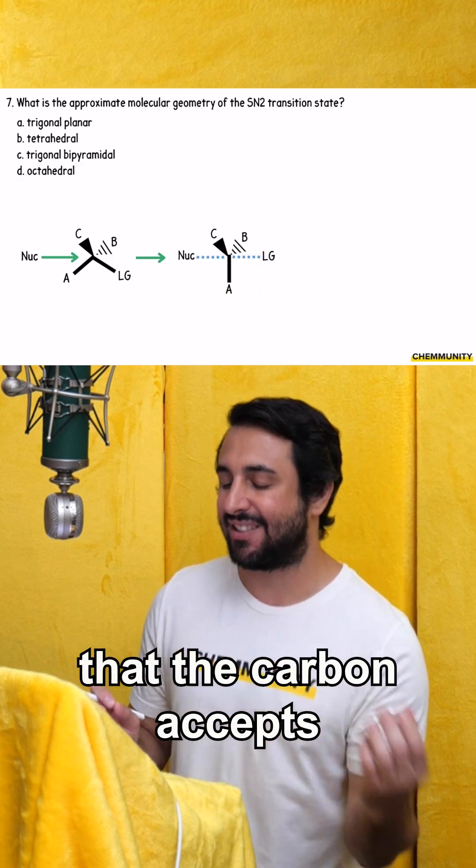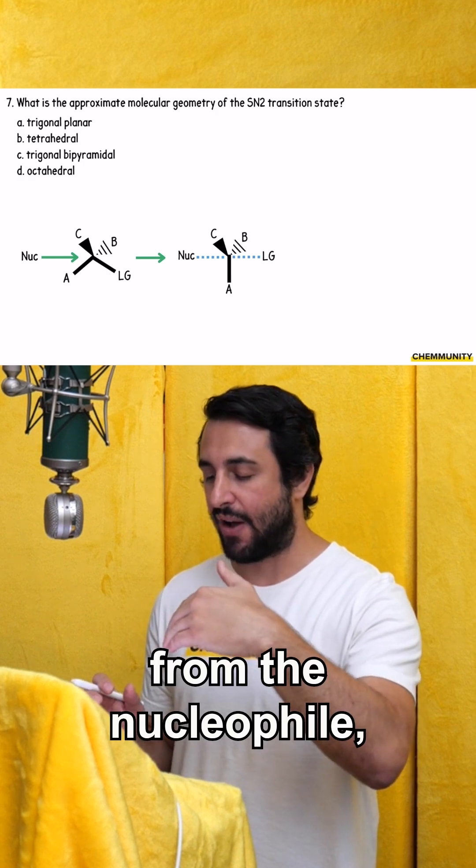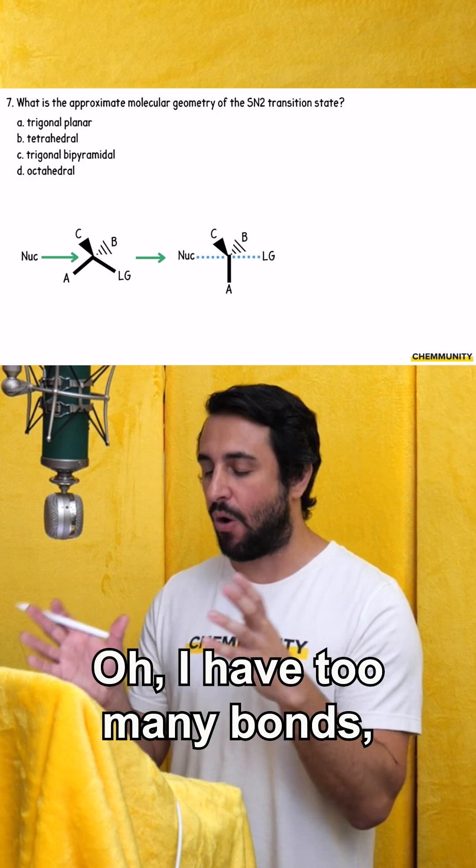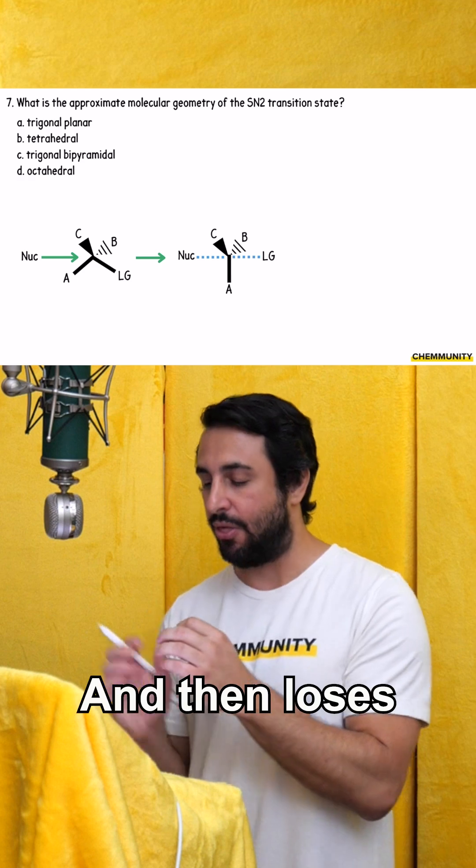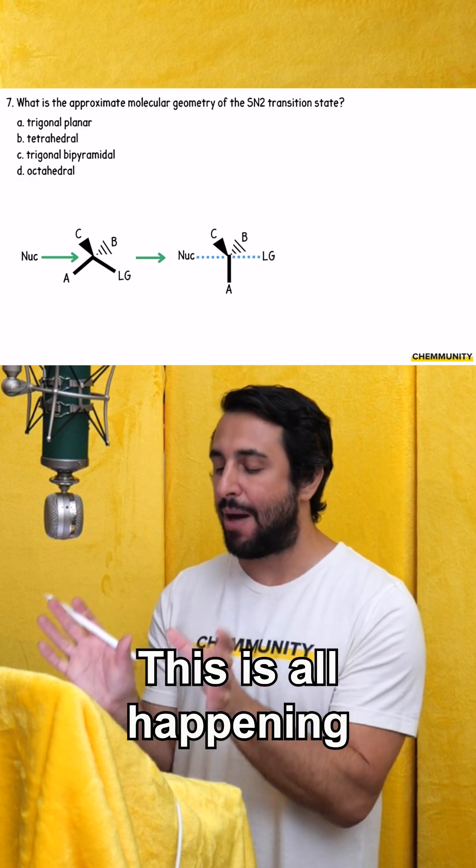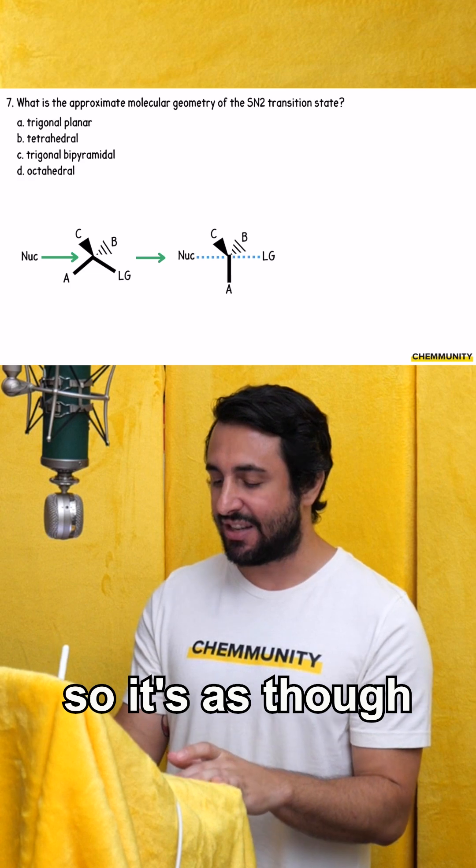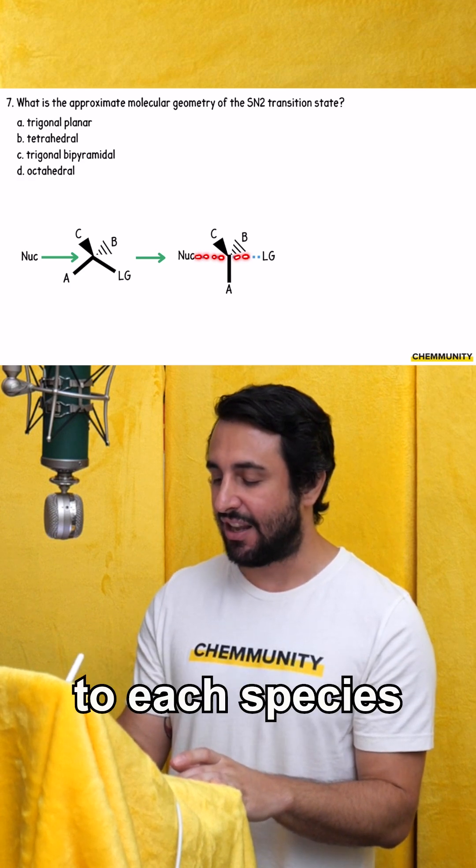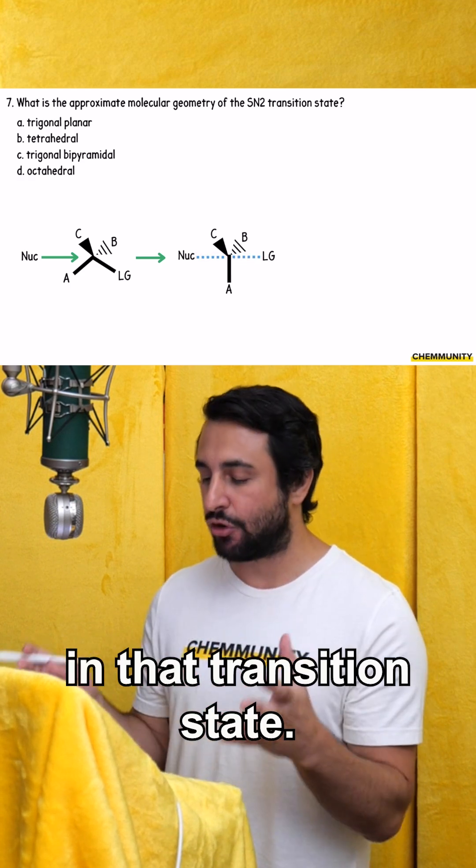It is not the case that the carbon accepts a fifth bond from the nucleophile, begins to panic and say, oh, I have too many bonds, I need to lose one and then loses the bond to the leaving group. This is all happening simultaneously. So it's as though we have half a bond to each species in that transition state.